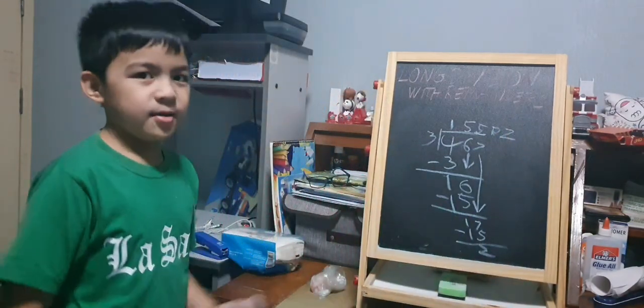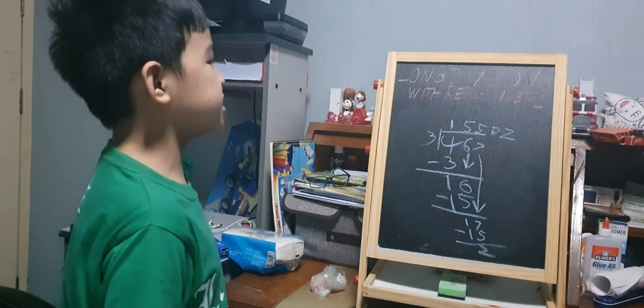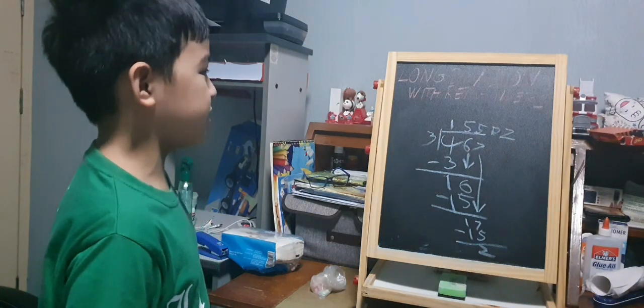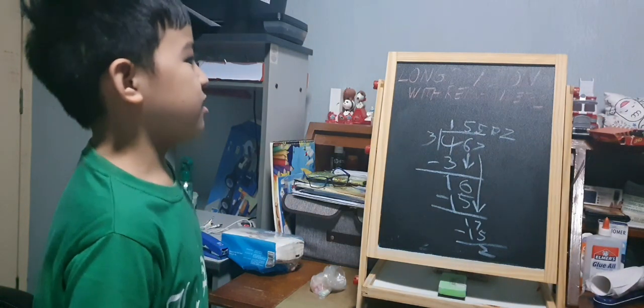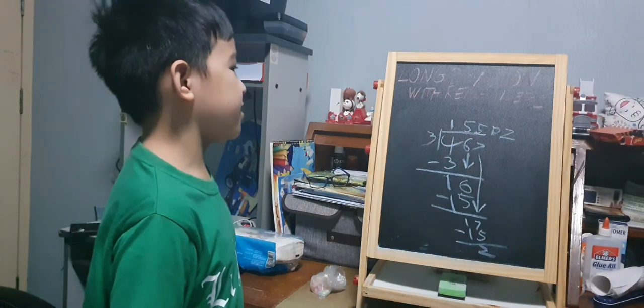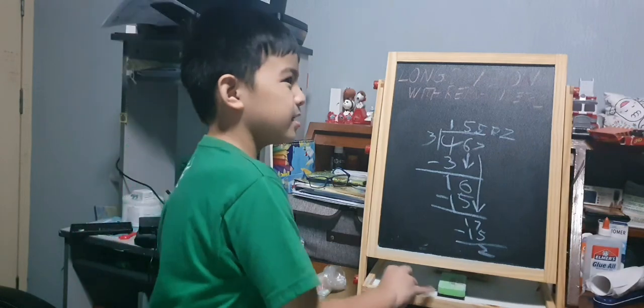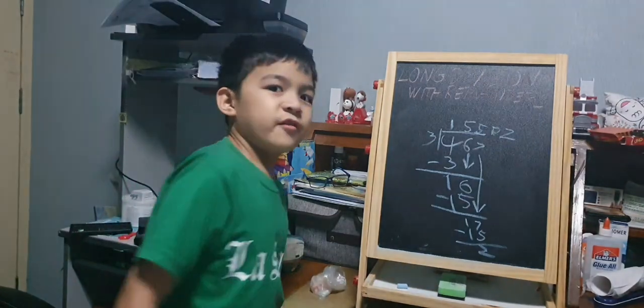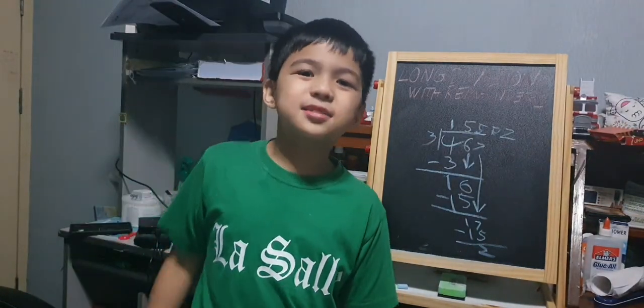The answer to 467 divided by 3 is 155 remainder 2. Thank you for watching everyone. I hope you learned something.